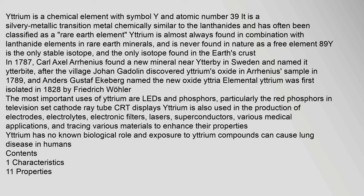89Y is the only stable isotope, and the only isotope found in the earth's crust. In 1787, Karl Axel Arrhenius found a new mineral near Ytterby in Sweden and named it Ytterite. Johan Gadolin discovered yttrium's oxide in Arrhenius' sample in 1789, and Anders Gustav Ekeberg named the new oxide yttria.